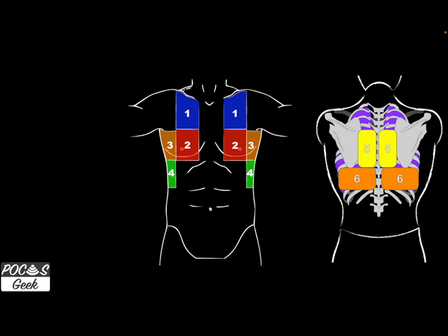If you have high suspicion and scan all four zones bilaterally without finding pneumonia, B-lines, or the pathology you're looking for, consider scanning zones five and six. These are not standard zones but are important when suspicion is high. During COVID, this is where we'd often see early COVID and developing ARDS. Again, we look at the rib spaces to assess the pleural line in those zones.